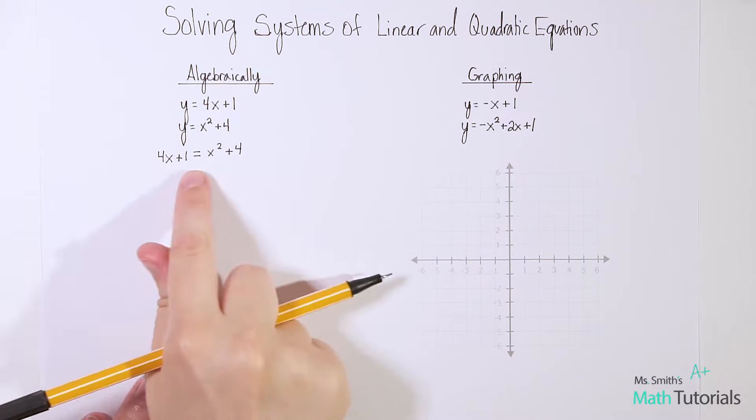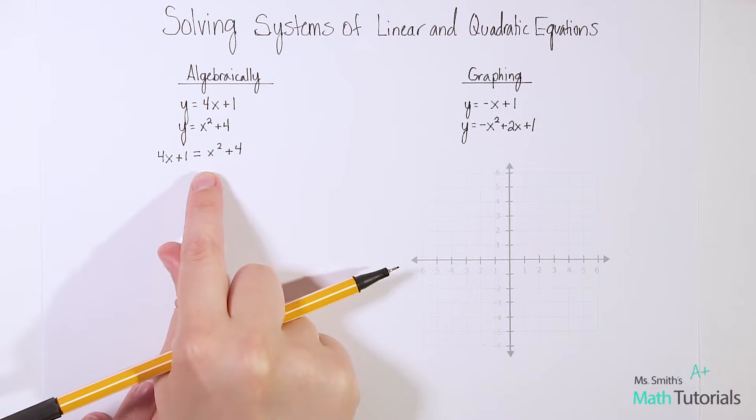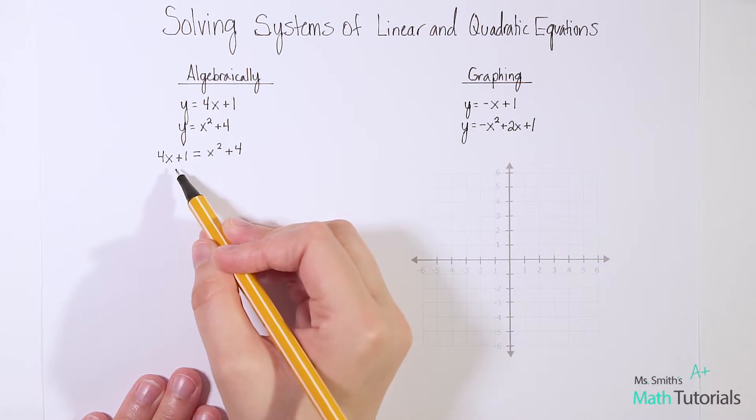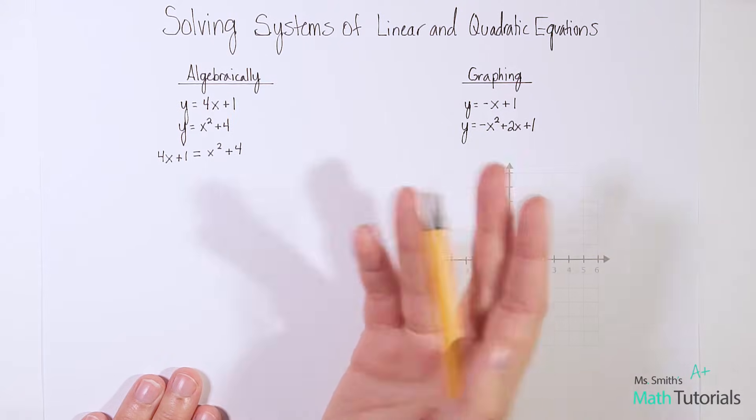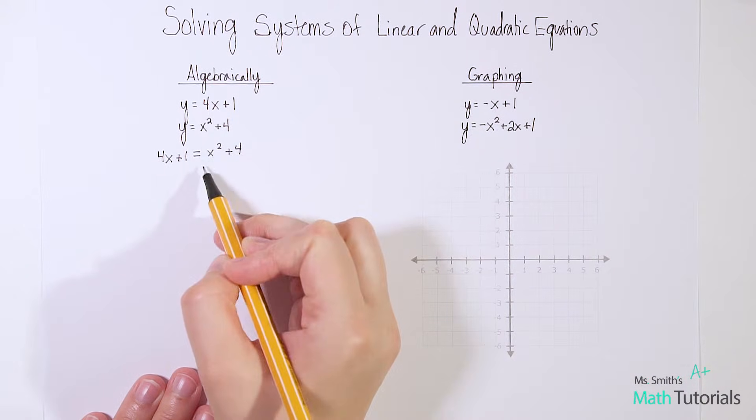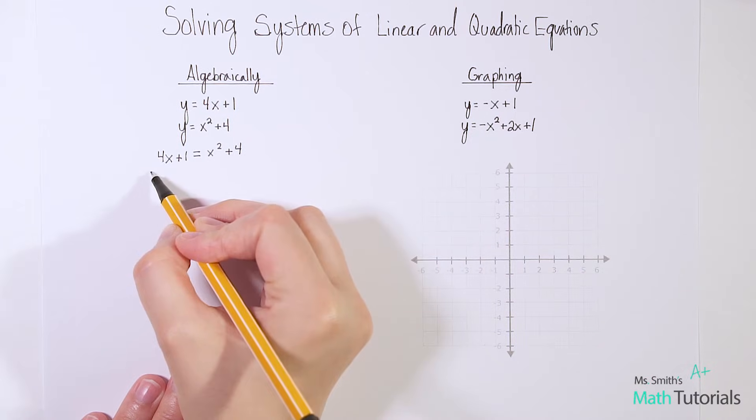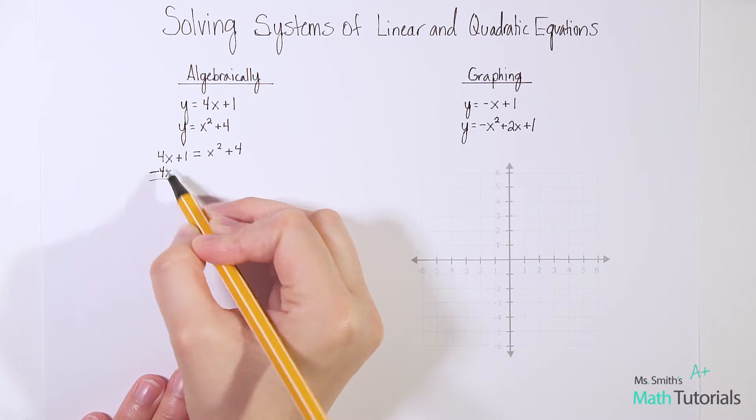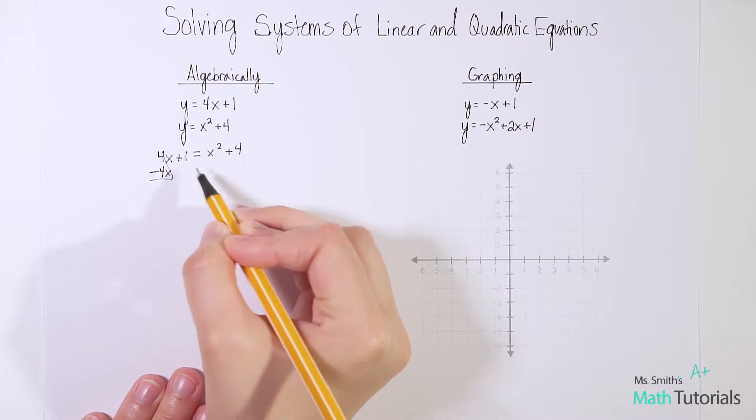So we can write 4x plus 1 equals x squared plus 4. If this equals this, and this equals this, then this equals this. Now at this point, I want to get everything together on one side of the equation. A lot of students are tempted to say, okay, well, let's subtract x squared and move it over here. Technically, you can do that. I don't recommend it. I always recommend keeping the x squared positive just to keep things clean and simple. So move the 4x by subtracting it over here, whatever is the x squared side, you want to go to that side.